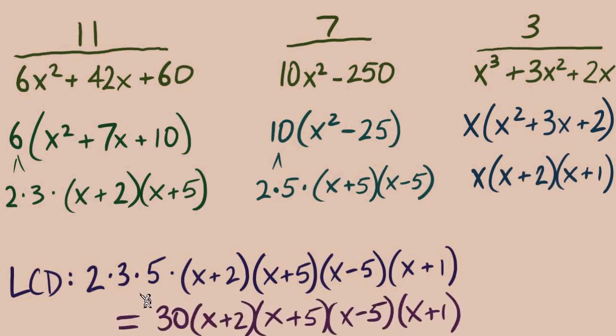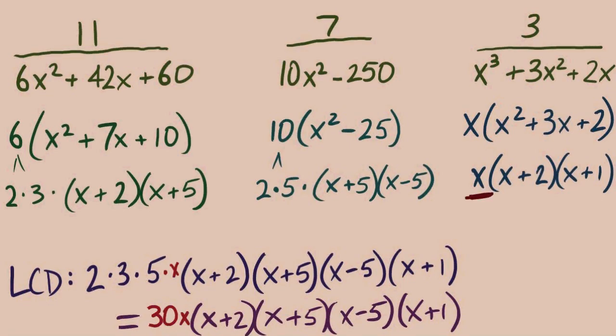Our numbers multiplied together, 30, and then x plus 2 times x plus 5 times x minus 5 times x plus 1. That was a very lengthy LCD, and it's only because once we had things factored we saw how many different kinds of parts we had. And I just spotted, I neglected it. There's an x right there. That also needs to be in our LCD. That looks a little bit better. There was an x that I left out, and so it does belong in our LCD.